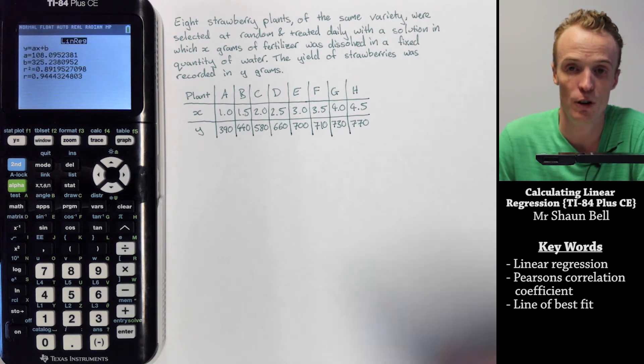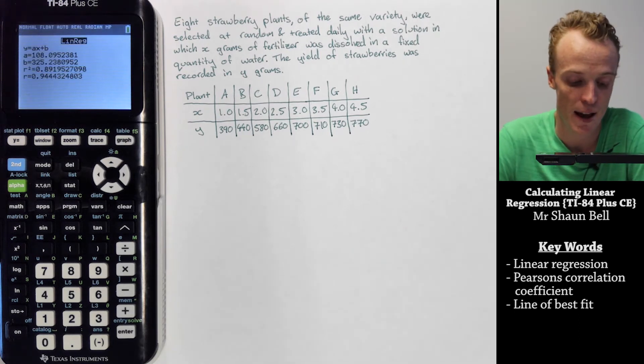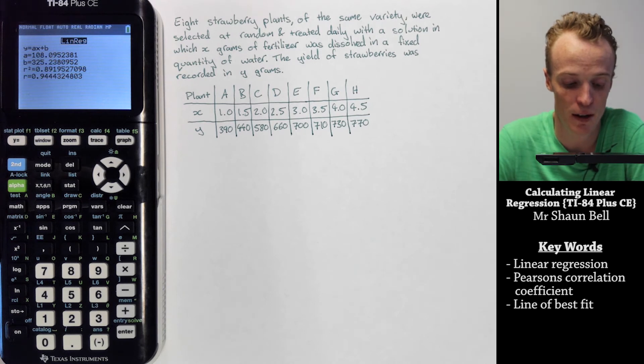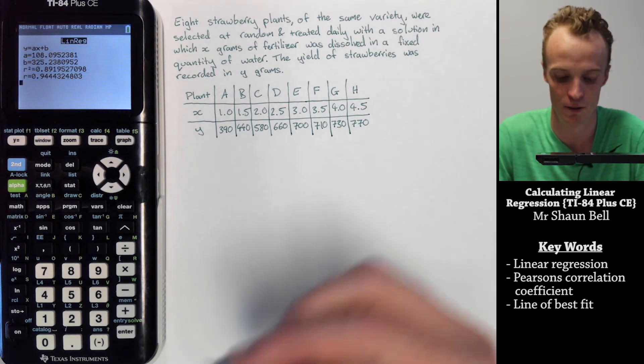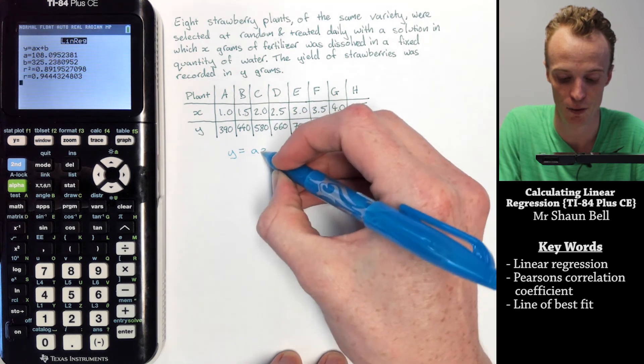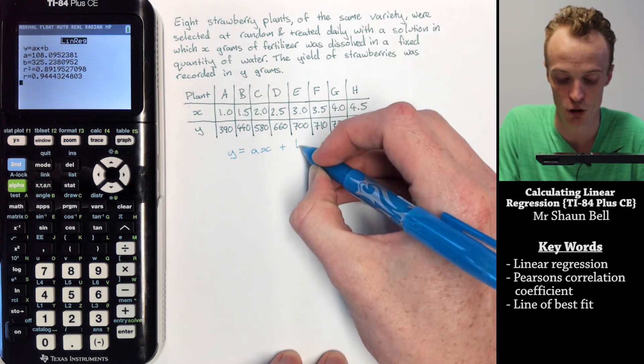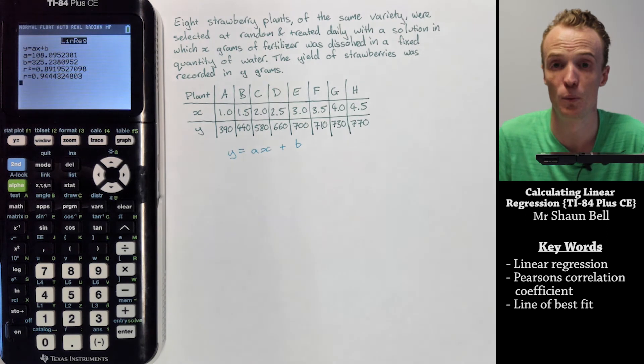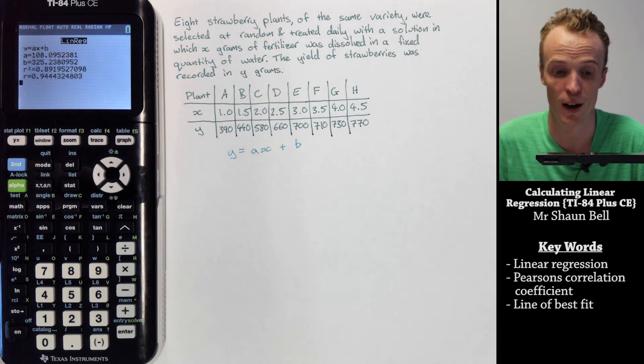From here it will show you what the a and the b approximately are equal to, as well as our Pearson's coefficient and our r squared value. So a linear regression equation is y equals ax plus b, which you might see sometimes written as y equals mx plus b, where m is your slope and c is your y-intercept. They are absolutely the same.